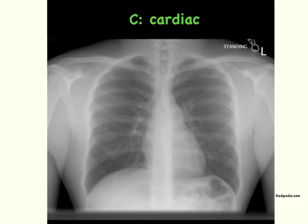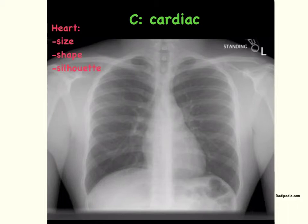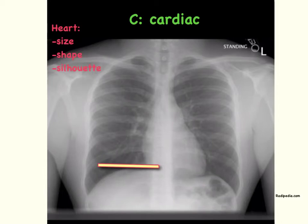C is for cardiac, so you're going to be evaluating the heart as well as other vascular structures. When evaluating the heart, you need to check the size, the shape, and the silhouette. When evaluating the size of the heart, you'll be looking specifically for cardiomegaly — you'll compare the diameter of the heart to the thoracic diameter. In adults and older children, the anterior cardiac diameter should be no more than 50% of the thoracic diameter. In neonates, the cardiac diameter is allowed to be 60% of the thoracic diameter. Here you can see this cardiac diameter is definitely less than half of the thoracic diameter.